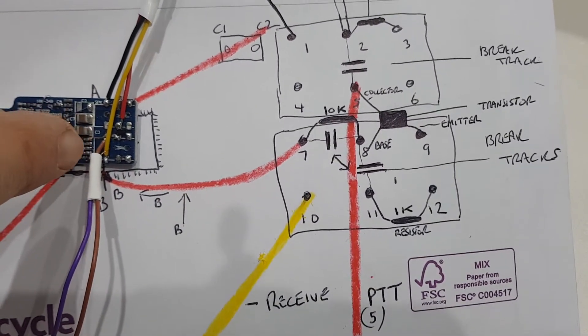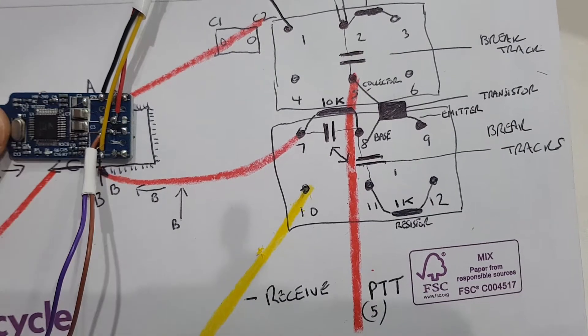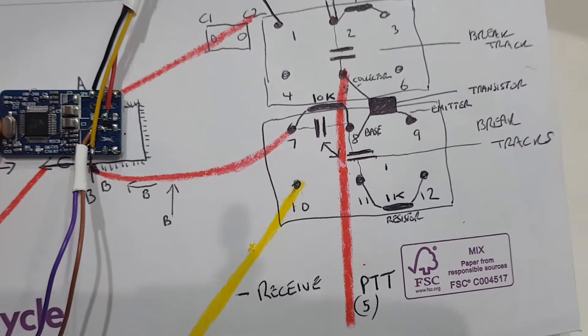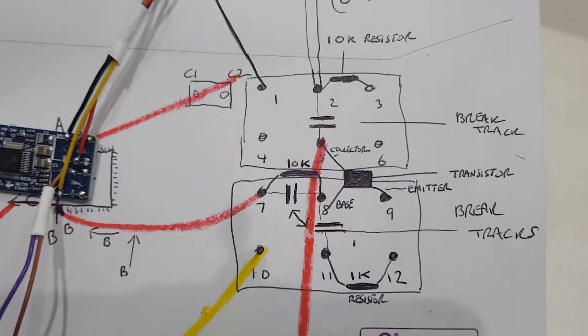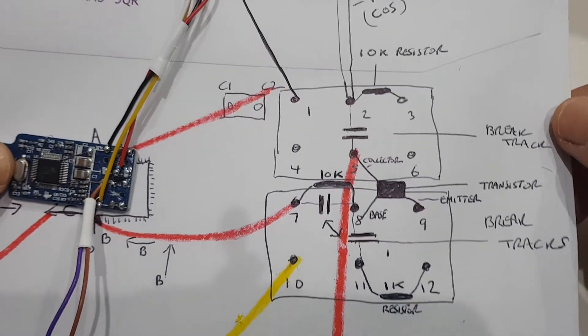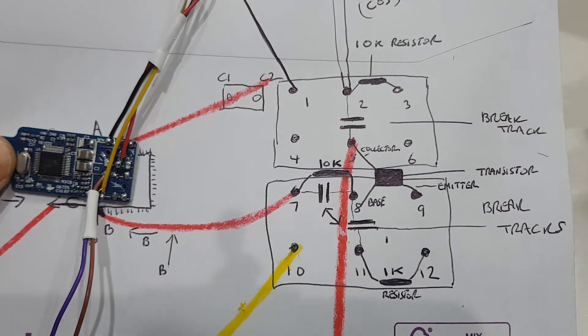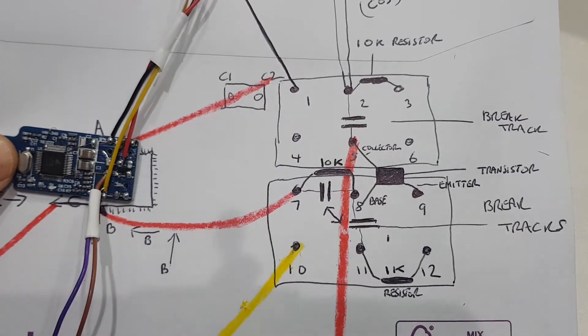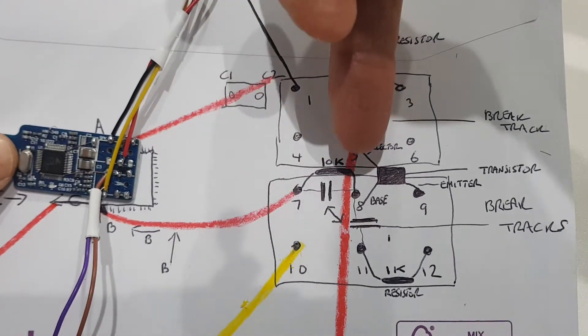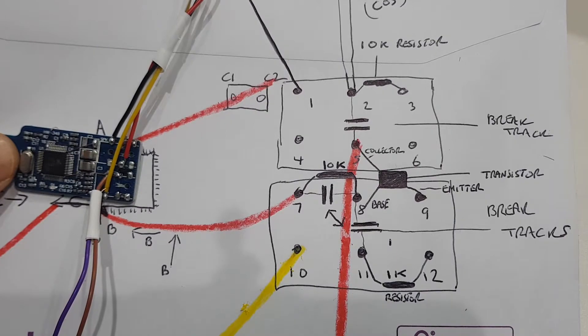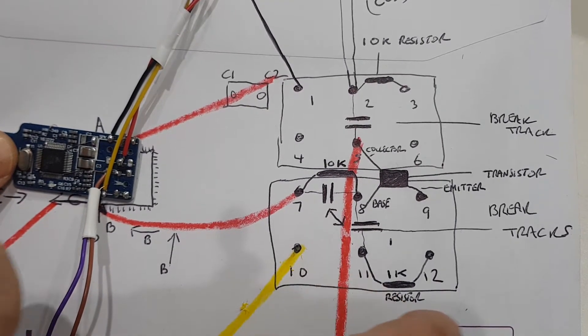And then underneath again, you've got seven, eight, nine, and at the very bottom, ten, eleven, and twelve. So what you need to do is add a 10K resistor between two and three, a 10K resistor between seven and eight, a 1K resistor between eleven and twelve.